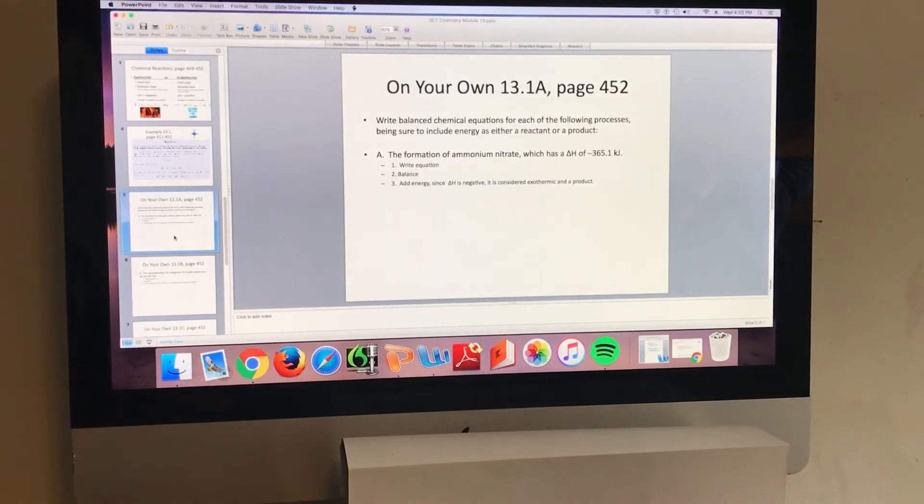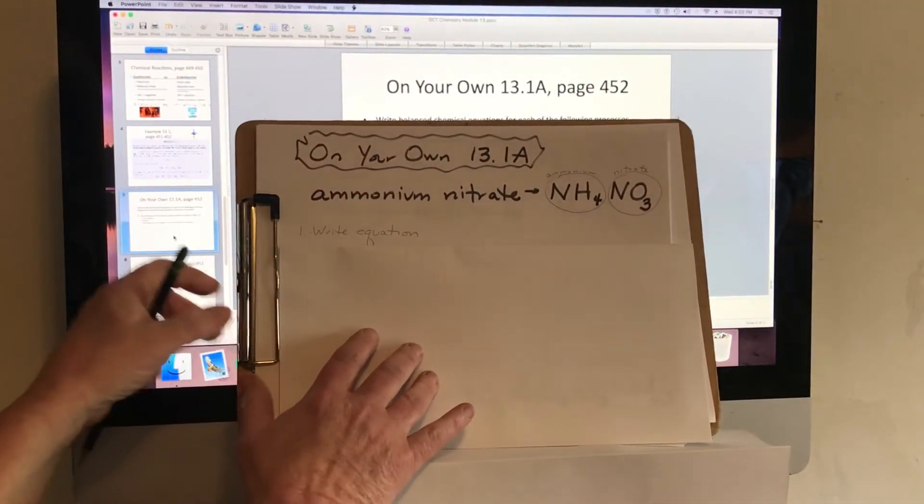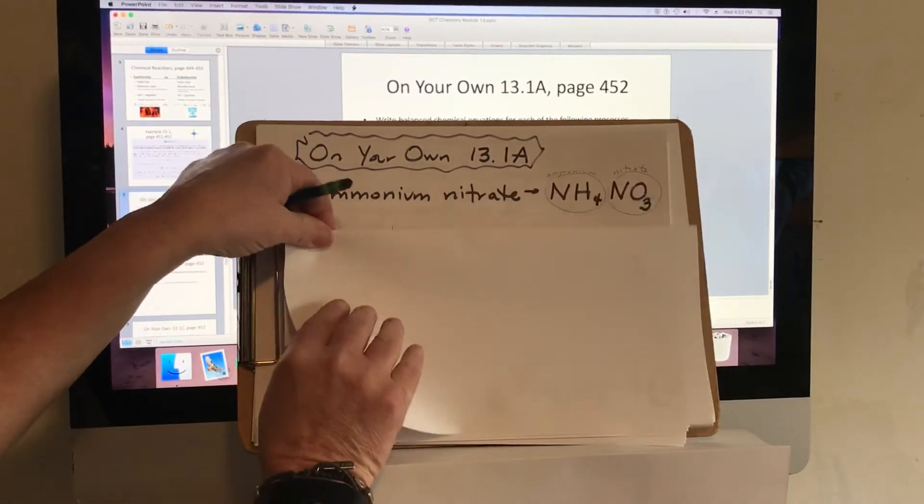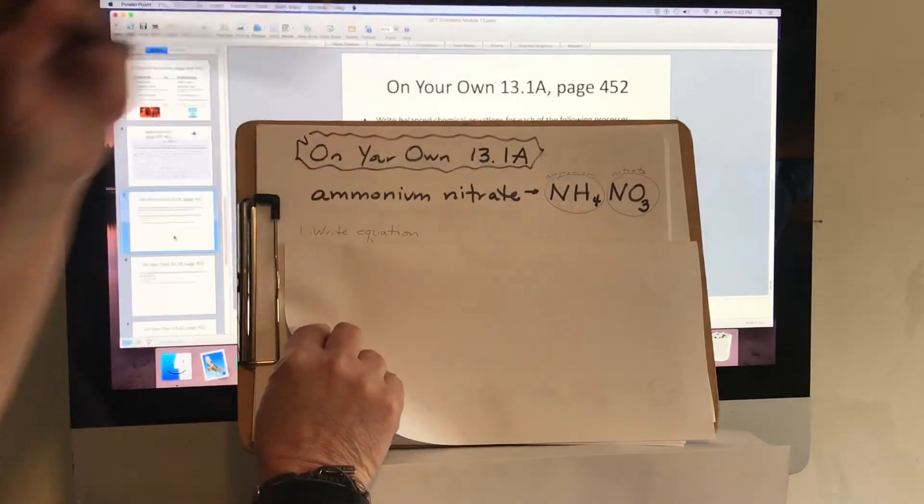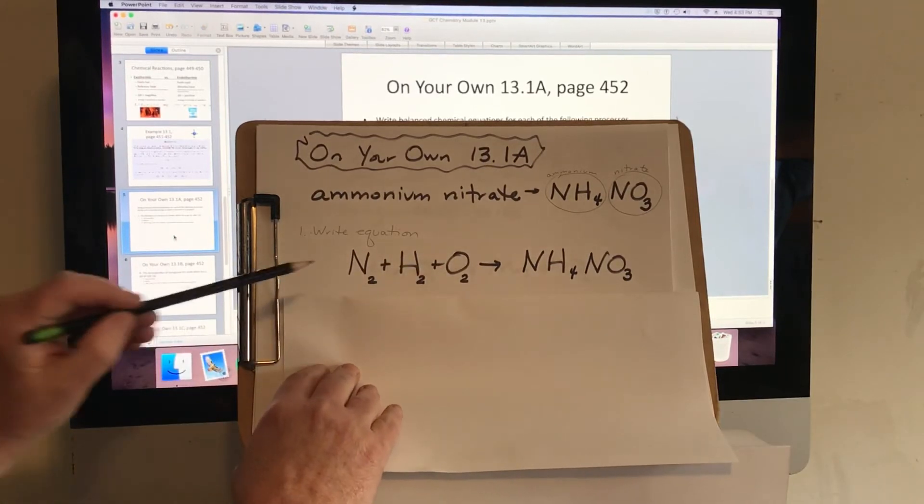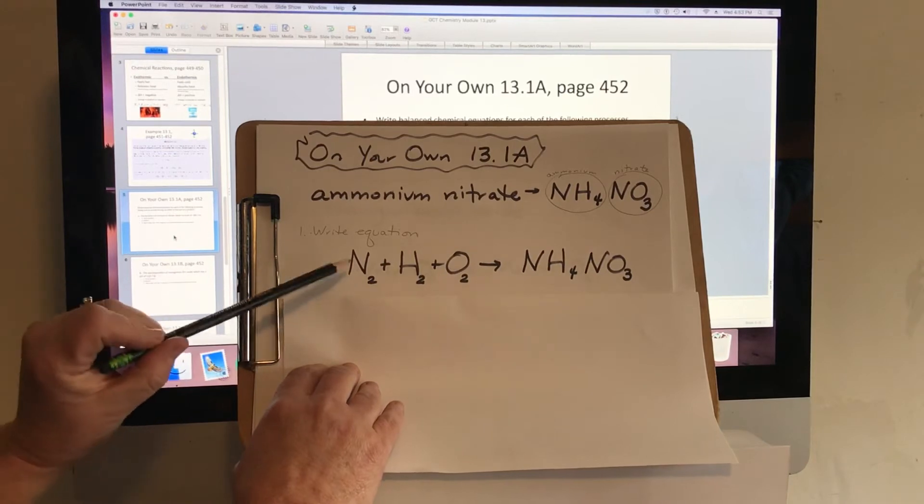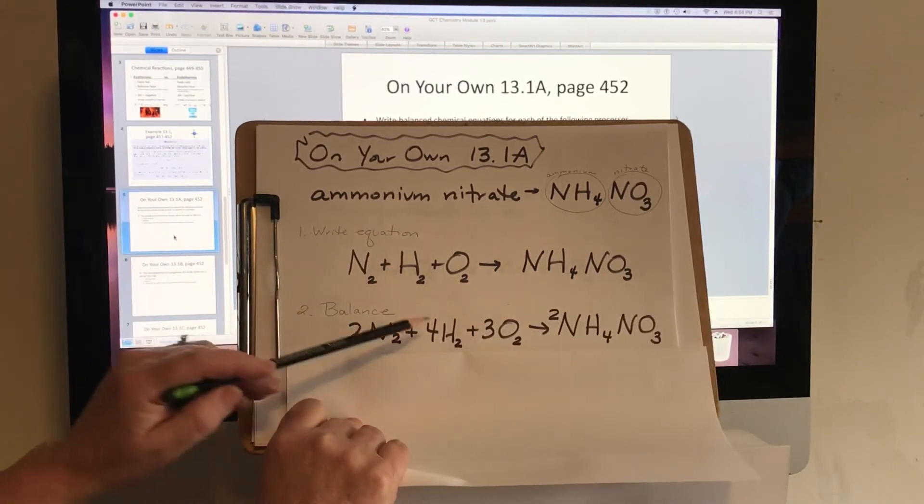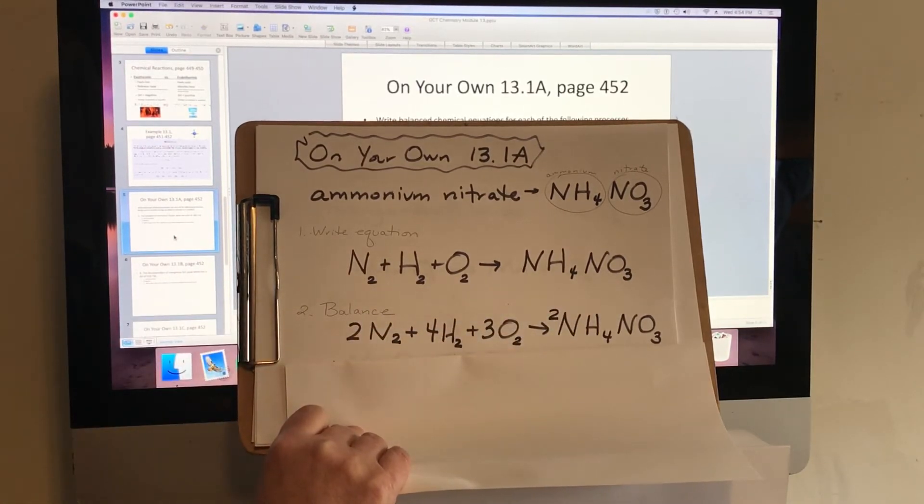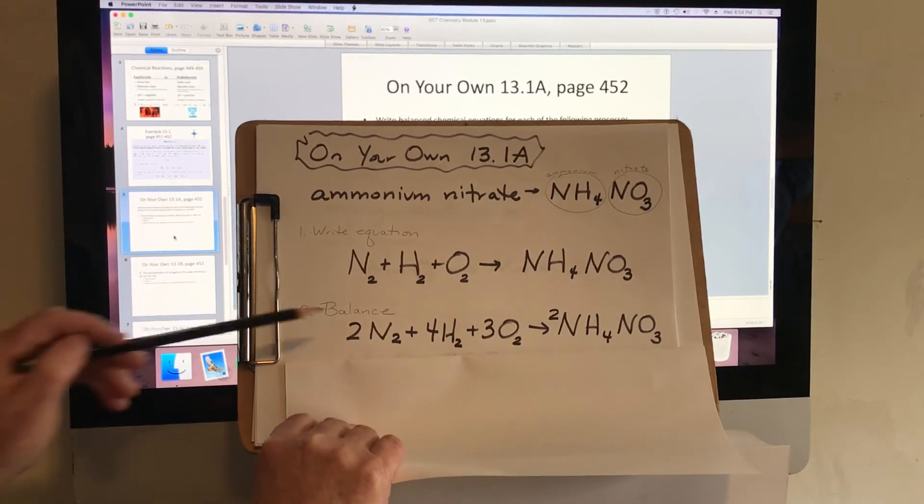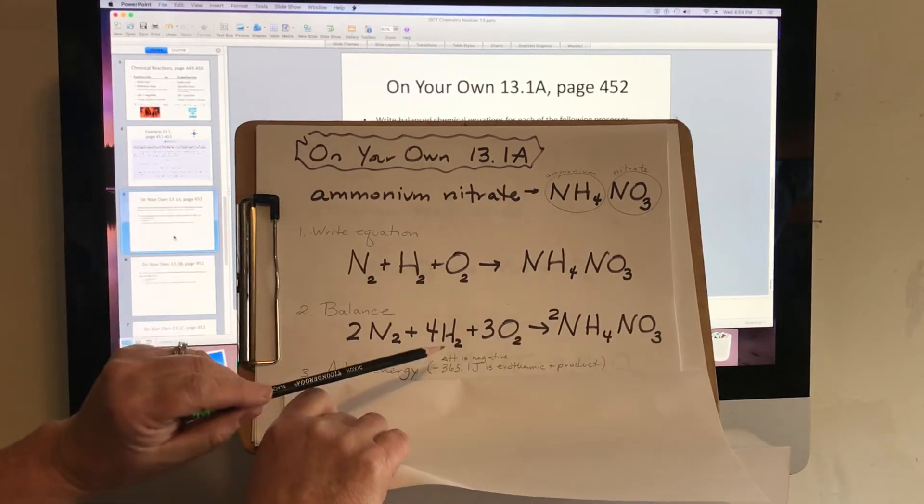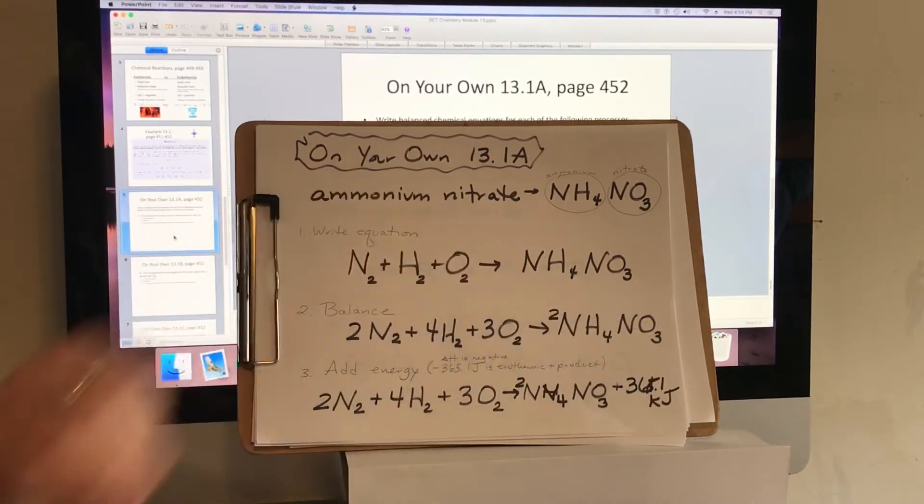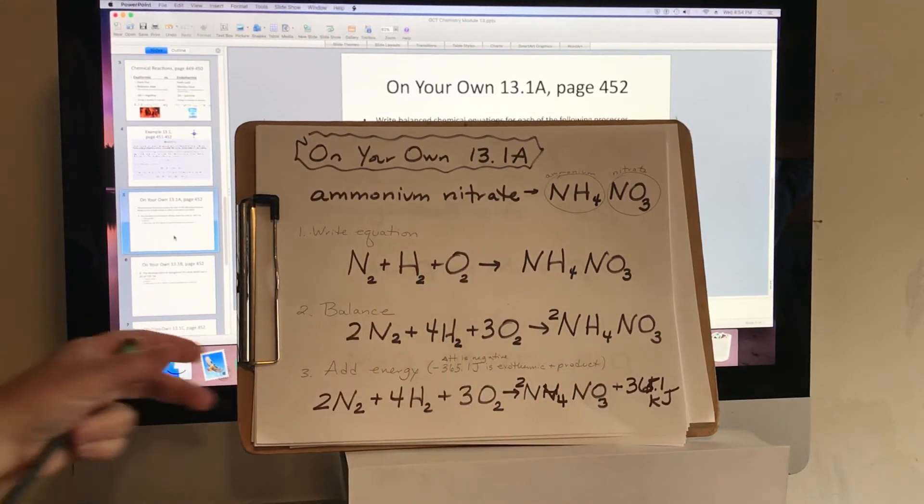So let's look here at our ammonium nitrate. These are two polyatomic ions, the ammonium and the nitrate. So if we're writing our equation, we have to look for the formation of this. We look at the different elements. And we have nitrogen, hydrogen, and oxygen, all found as homonuclear diatomic molecules, N2H2O2. But we need to balance this equation. So we have a 2, a 4, a 3, and a 2. That helps balance out all our molecules. Then we're going to take this balanced equation and add the energy. Since the energy is negative, the 365.1 kilojoules will be put in as a product over here. So it's the same equation plus the energy.